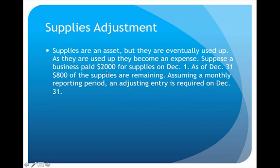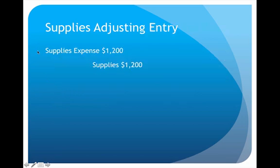In this example, the company is starting out with $2,000 in supplies. It's now the end of December, and they take a physical inventory of the supplies, finding that there are $800 of supplies remaining. So an adjustment is required. The asset has a $2,000 balance and needs to have an $800 balance. The journal entry would be to debit supplies expense $1,200 and credit supplies $1,200 — the difference between $2,000 and $800.